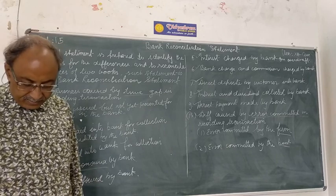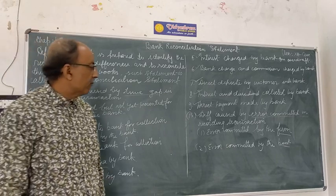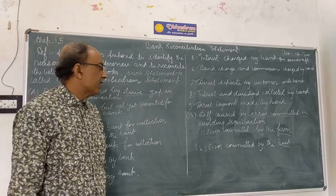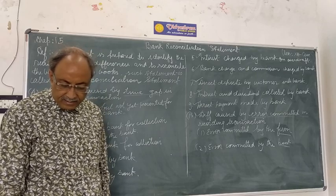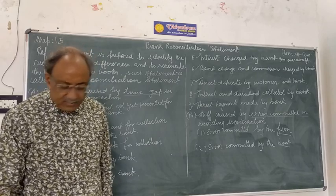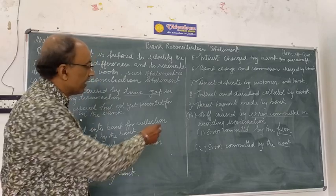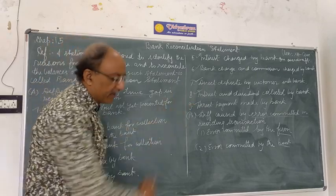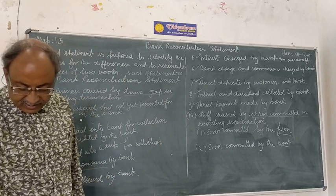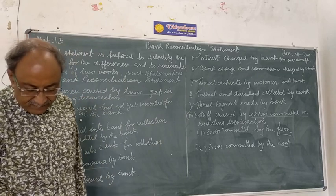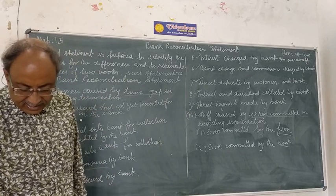After that, errors committed by the bank: the bank also commits errors, such as wrong entries or incorrect amounts recorded in the bank statement. These mistakes create differences between the cashbook balance and the bank statement balance.